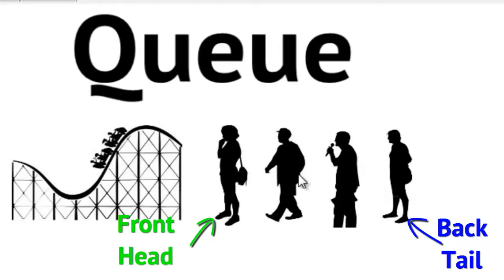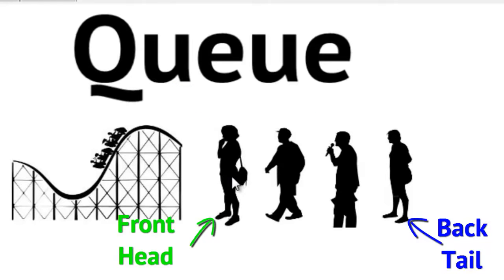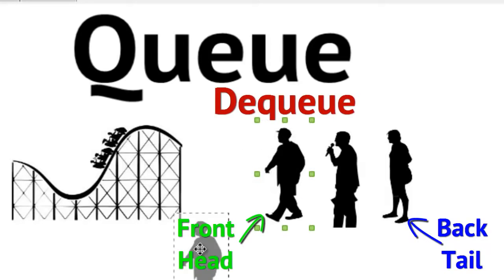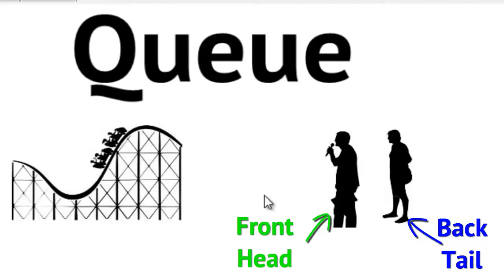Now that we have four people in our queue, let's look at removing someone — this is called dequeuing. Dequeuing only occurs at the front or head of the queue. This is a first-in, first-out structure, so the first person in line is the first to be dequeued. The lady is now dequeued and can get on the ride. The gentleman behind her now becomes the head of the queue. If there's more space on the ride, he can be dequeued next. Every dequeue operation must happen at the head of the queue.